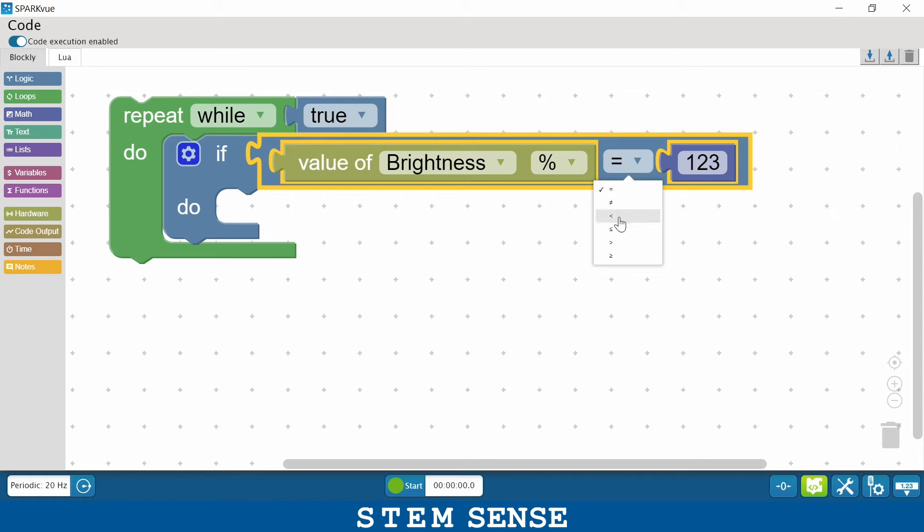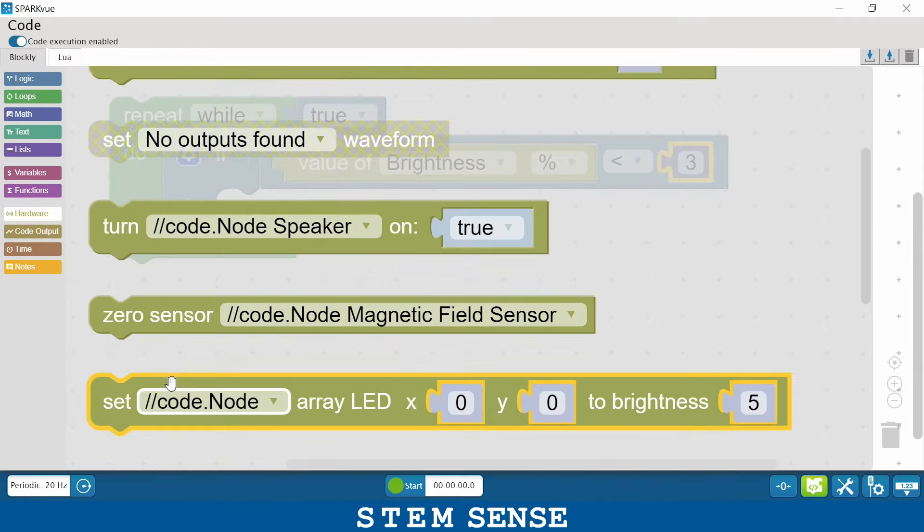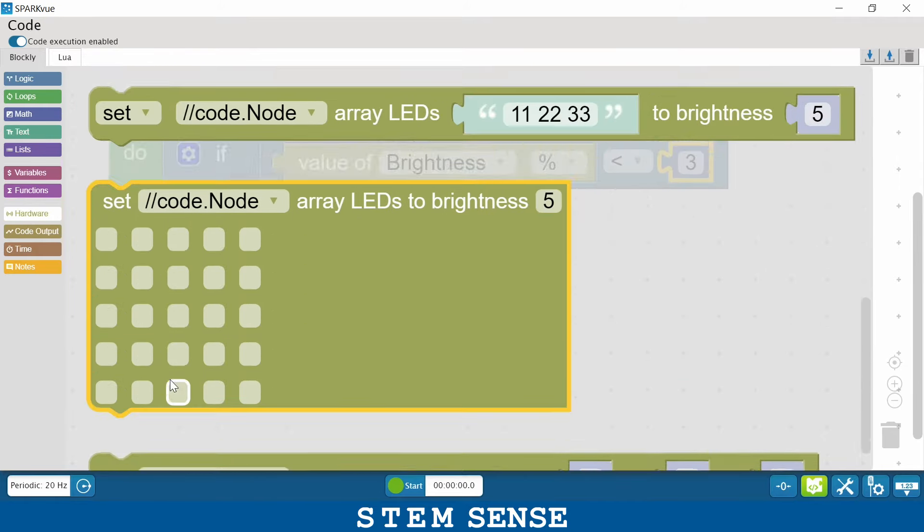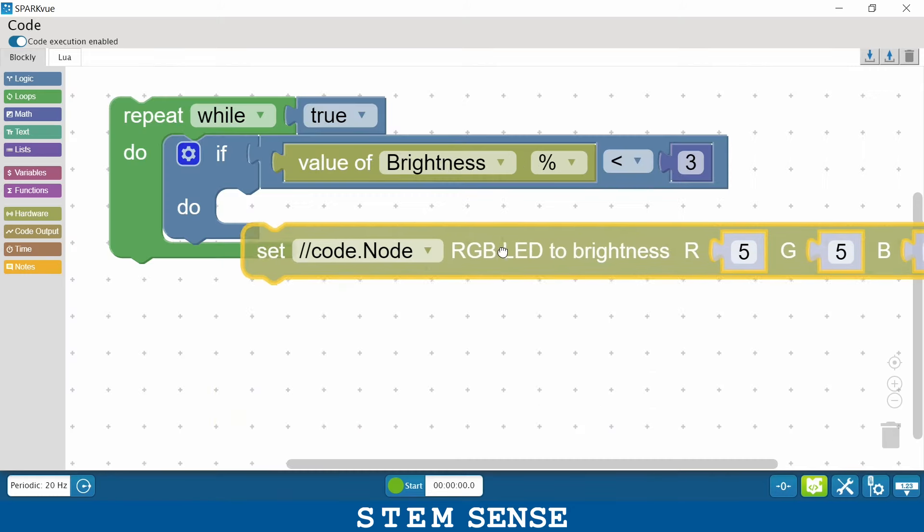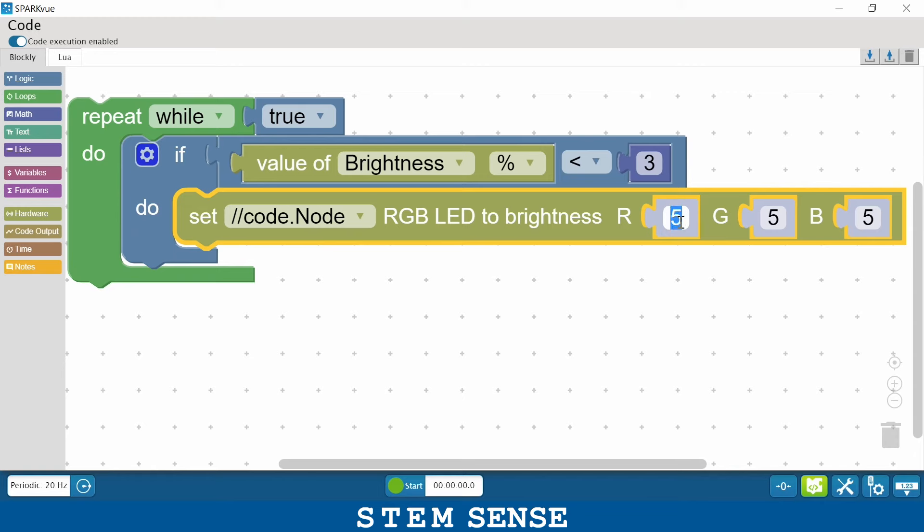So that's important in my program because I'm going to say if the value of the brightness goes below, let's say, 3 percent, it's then going to trigger my RGB LED light to come on. And you find that all the way at the bottom in hardware. Now remember the direction said to start by setting each of these intensities to 10.